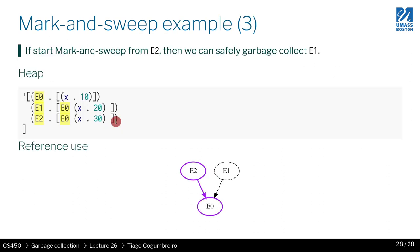So here's another example where if we start from E2, E2 is pointing to E0 and E0 is not pointing to anyone else. So therefore E1 will be deleted.